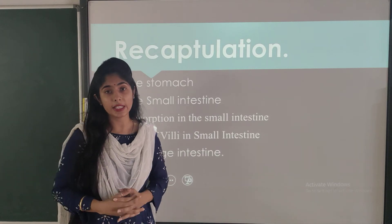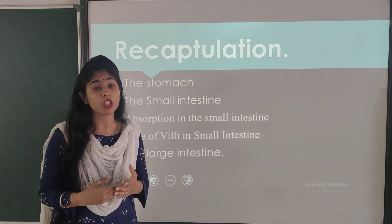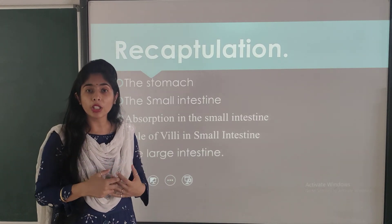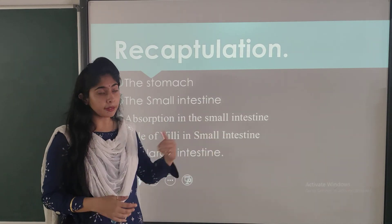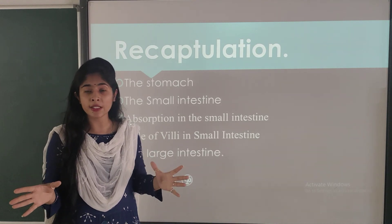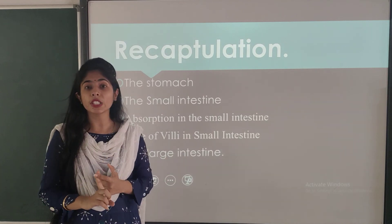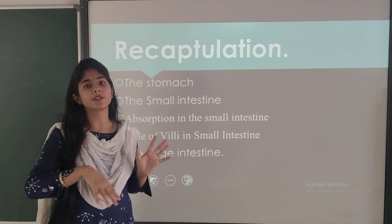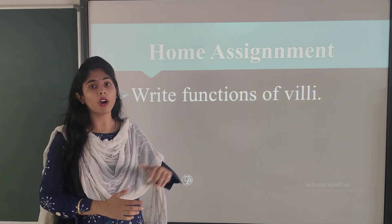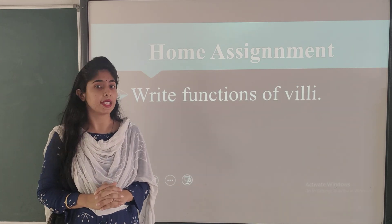Let us recapitulate what we have studied. The stomach is a flattened U-shape with hydrochloric acid and digestive juices useful for digestion. The small intestine is very long and absorbs all the nutrients by the help of the villi. The villi absorb all the nutrients and transfer them to other parts of the body — this whole process is assimilation. In the large intestine, water and salts are absorbed, and the undigested food moves to the rectum and exits through the anus. Your home assignment is to write the functions of the villi in your science notebook. Thank you and stay home, stay safe. Have a nice day.